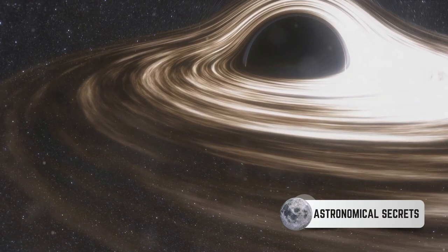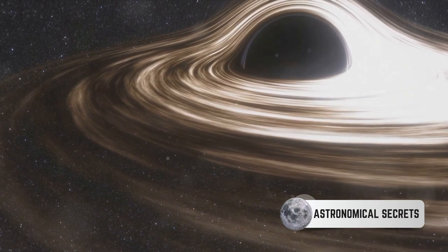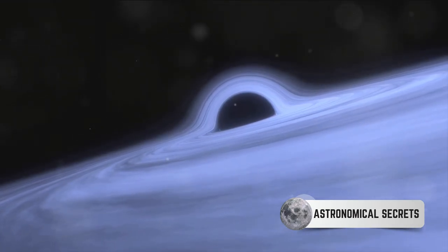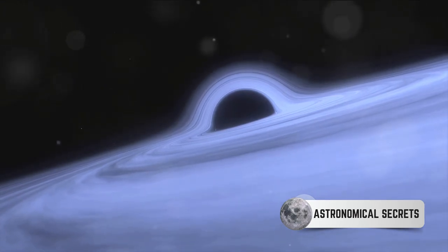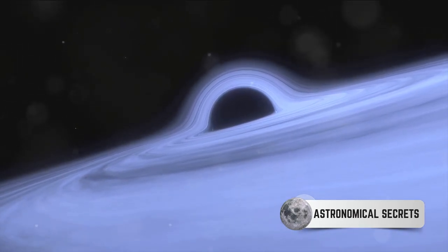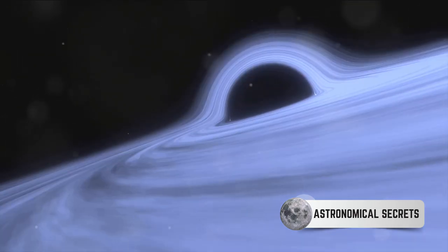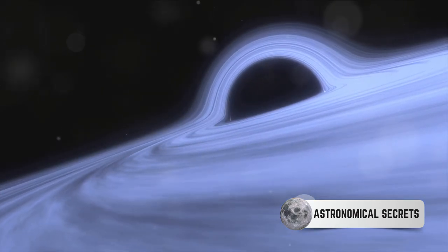This is where accretion disks step into the spotlight. Scientists study accretion disks, the spiraling buffet of matter surrounding black holes through indirect observations. It's akin to noticing the ripples on a pond to infer the presence of a stone beneath the surface. The matter within these disks spirals inward, heating up and emitting light as it does so.